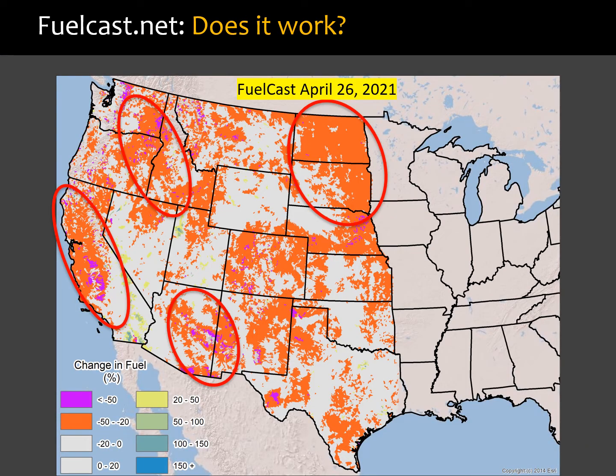Well, does it work? It does in most places. This is FuelCast dated April 26, 2021. Take a look at the four areas circled in red. We said 82 percent of U.S. ranges were going to be experiencing reduced yields — and you know how bad 2021 was. We highlighted the northern Great Plains, the inland northwest, the Snake River Plain, eastern Washington and Oregon, and California as being in really bad shape. We did miss the boat a little bit in Arizona and much of the southwest due to the monsoons.